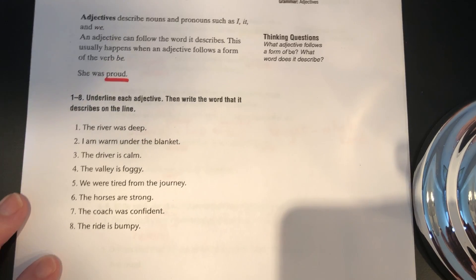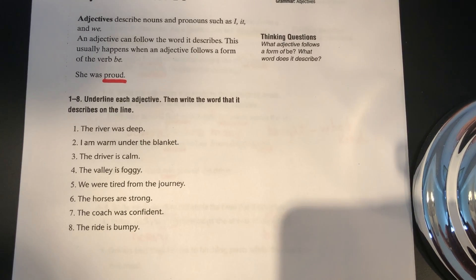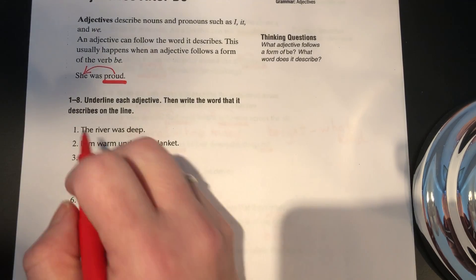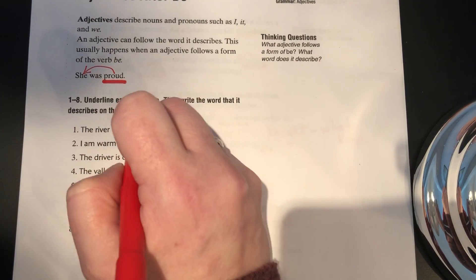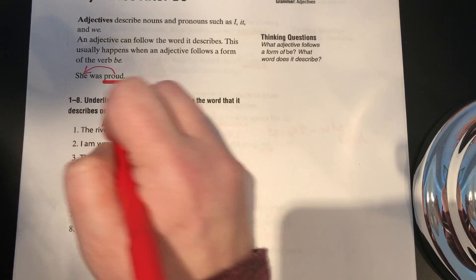The last page I'm going to go over with you today is page 200. At the top, it describes the adjective after be. Adjectives describe nouns and pronouns such as I, it, and we. An adjective can follow the word it describes — this usually happens when an adjective follows a form of the word be. So in the sentence, she was proud, proud would be the adjective describing she. For numbers one through eight, the students have to underline the adjective and then write the word that it describes. For example, sentence number one: the river was deep. Deep would be the adjective, so you would underline that, and deep would describe the river.